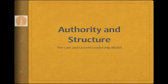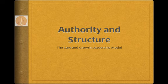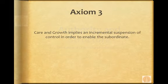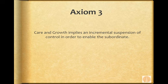In this module, we're going to examine what the implications for structure and organization are when one applies the care and growth model. In the first instance, you'll remember that when we examined the basic axioms that go into the care and growth model, it became apparent to us that when one empowers, it has an effect on control. And we therefore concluded that care and growth implies an incremental suspension of control in order to enable the subordinate.